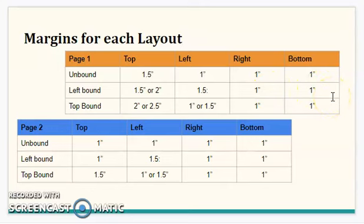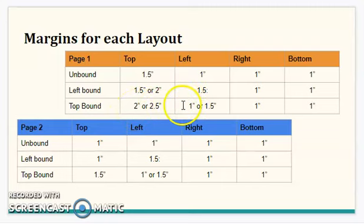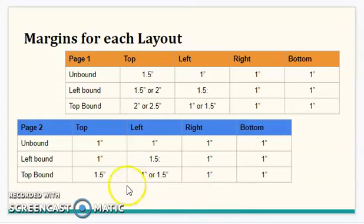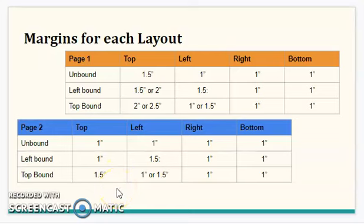I'm following the unbound margin — remember that. If I'm doing a top bound manuscript, the unbound top is 1.5, so if I add 0.5 to that, my top bound manuscript would be 2 inches, and I keep my left, right, and bottom margin at 1 inch. Note that there are other standards, but that is what I use. For page two, the unbound manuscript is 1 inch all around. If doing a left bound, just add 0.5 to the left; if doing a top bound, add 0.5 to the top to get 1.5.